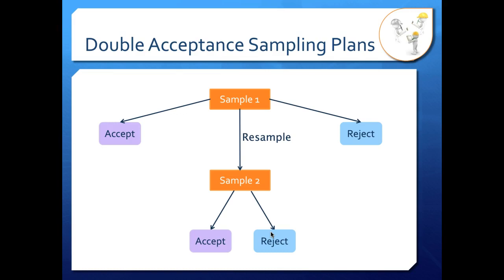To do this, you have two sets of acceptance criteria. In your first sample, you have C1 and R1 — your acceptance criteria and your reject criteria for your first sample. You accept the sample if the number of non-conformities is less than or equal to C1, and you reject if the number of non-conformities is greater than or equal to R1. You resample if the number of non-conformities is between C1 and R1, so you don't have enough information to make a decision in that scenario.